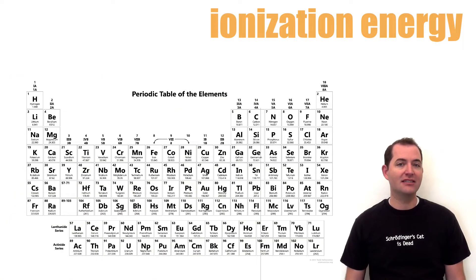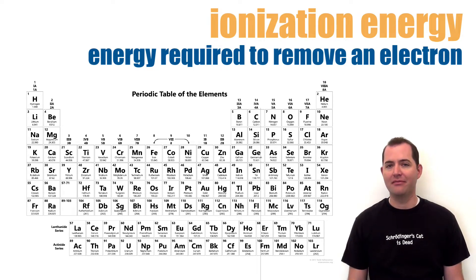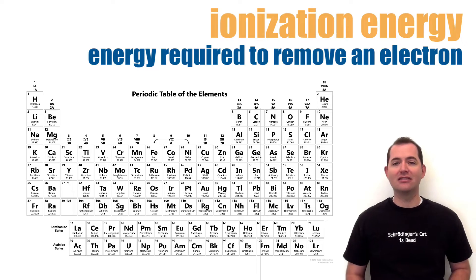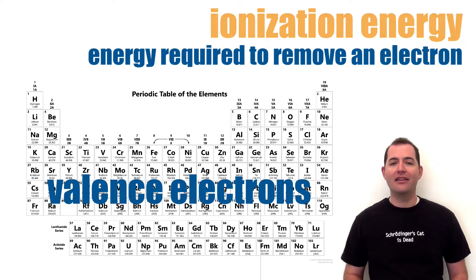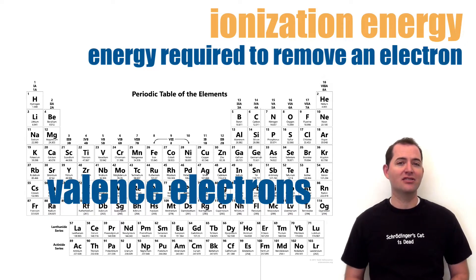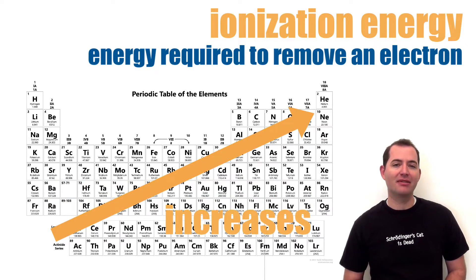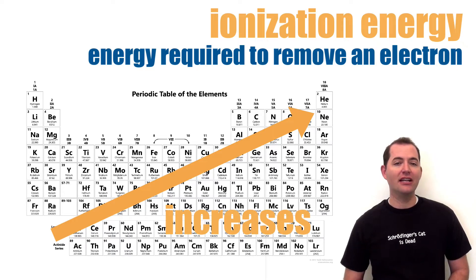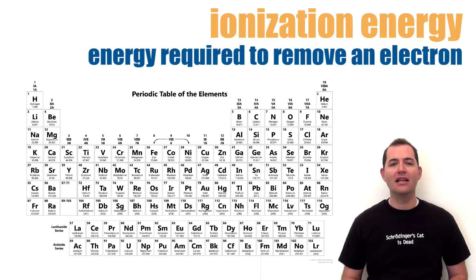Ionization energy is another periodic trend. It is the amount of energy required to remove an electron from an atom — specifically a valence electron. The further away these valence electrons are from the nucleus, the easier it is to remove them. The ionization energy trend is opposite to the atomic radius trend: ionization energy increases as we move up and to the right on the periodic table.